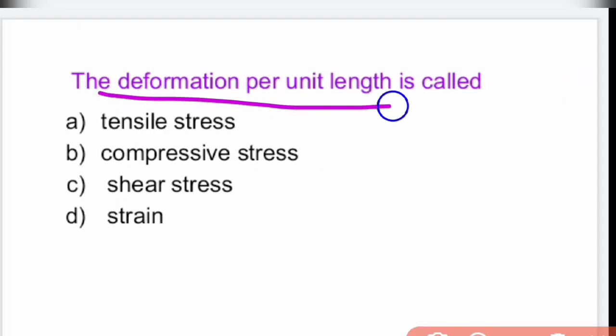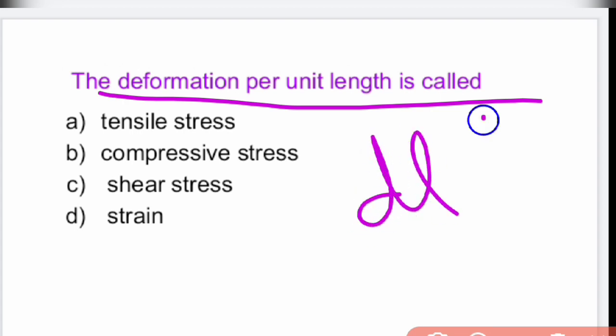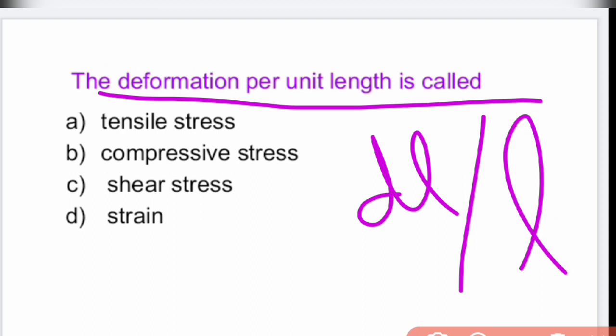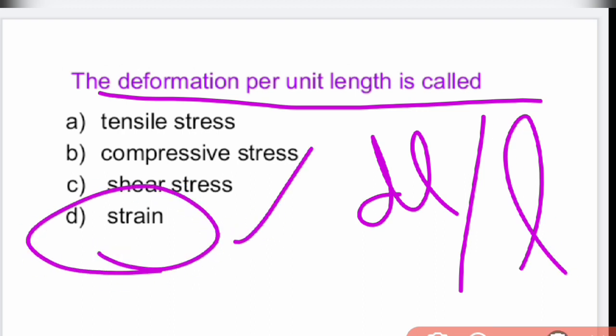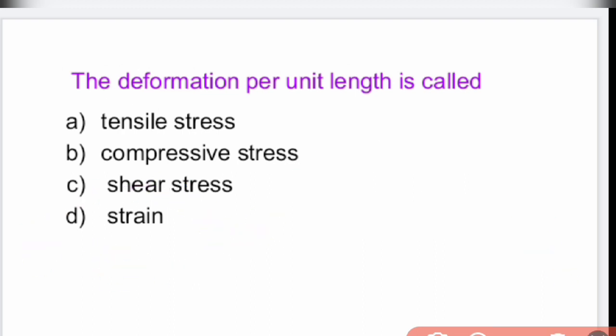The deformation per unit length is called strain. It is called strain — option D.